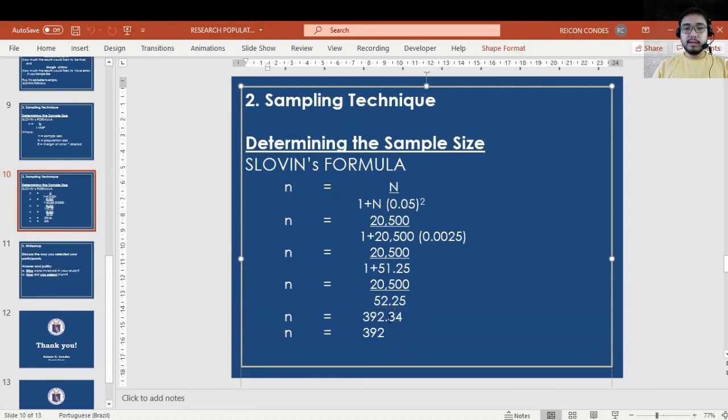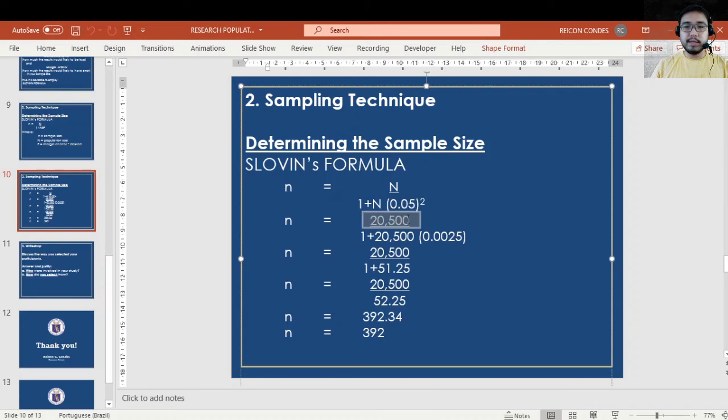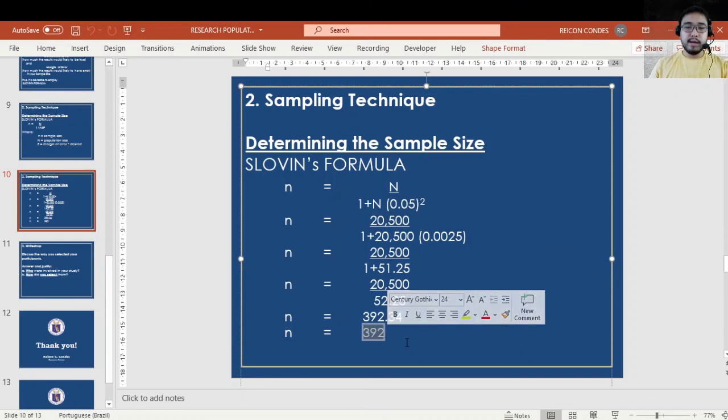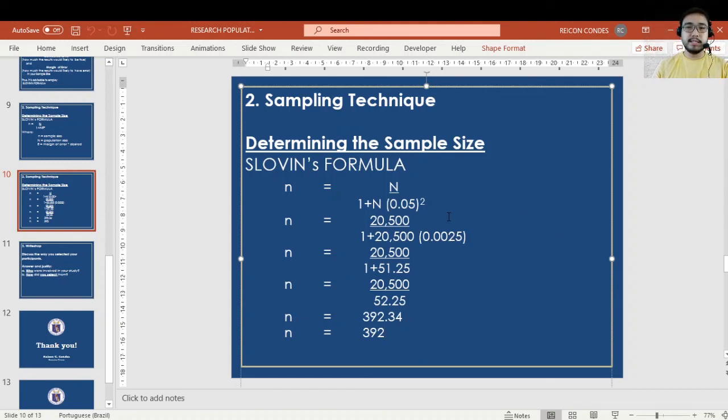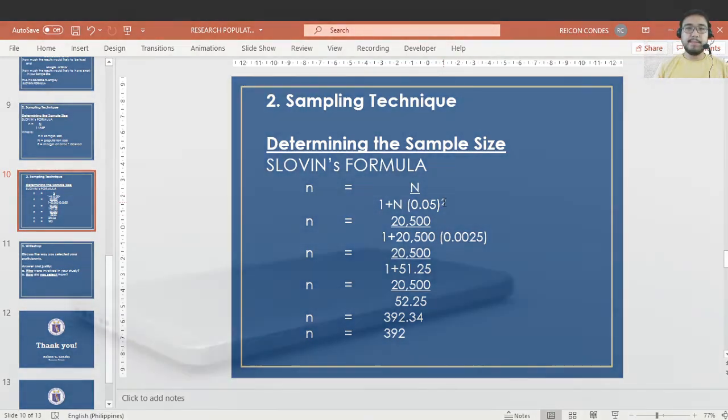There's no 0.34 of a person, so you have 392 as your sample size. Imagine from 20,500, instead of you approaching this 20,500, you must have a respondent or participant of only 392. That's how you determine a sample size. However, there are other ways to determine sample sizes, but this one is the most commonly used. Let's proceed to our next topic, the different sampling techniques.